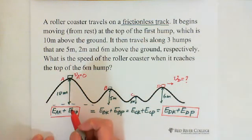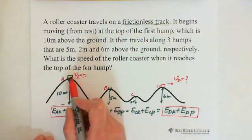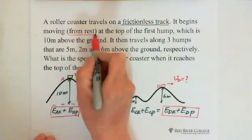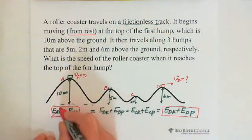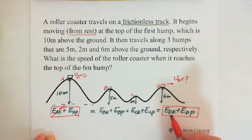And also we are given at point A it starts from rest, so this is equal to zero. And MGH is given, this is 10 meters. And at this point, the height is given. So we can find the velocity at point D.